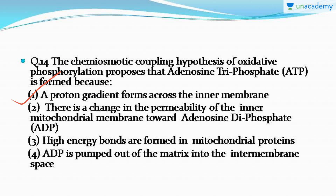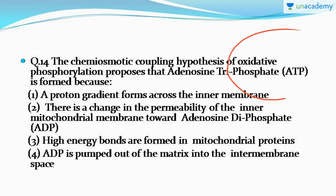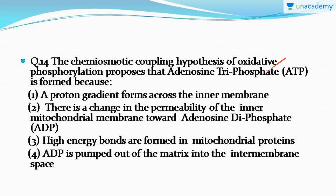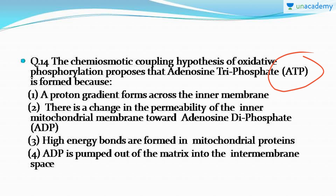The correct answer is option number one. If you remember the diagram from NCERT — this is the mitochondrial inner membrane — this is where the H⁺ gradient, or proton gradient, forms. When this proton gradient crosses the inner membrane, ATP synthase enzyme comes into action and forms the ATP. This question and this topic are very important; please go through it from NCERT once.